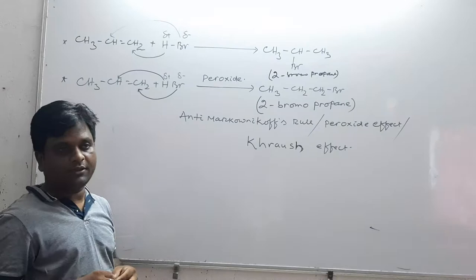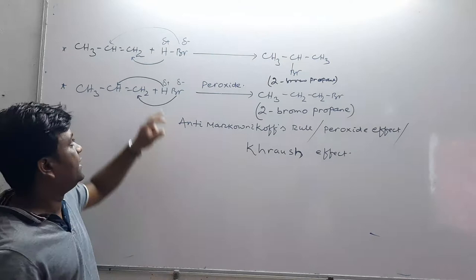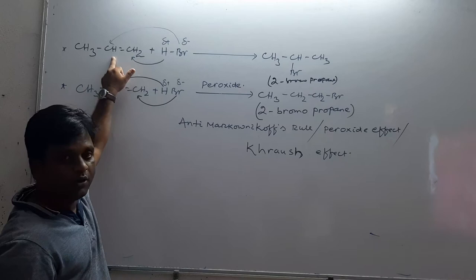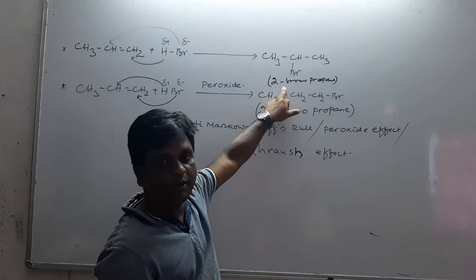Alkenes can be symmetrical or non-symmetrical. In case it is non-symmetrical, the negative part of the reagent goes to the carbon which has less hydrogen. So here the product is 2-bromo propane.